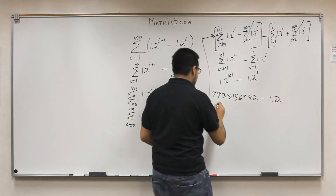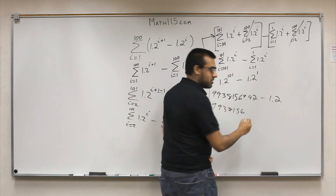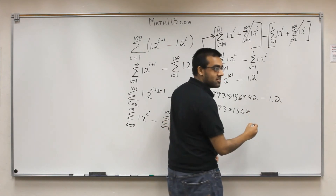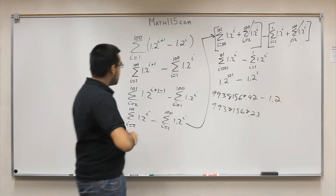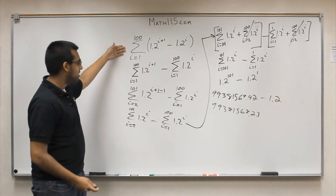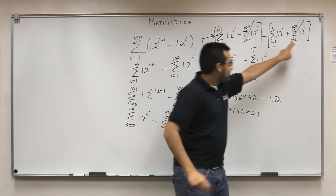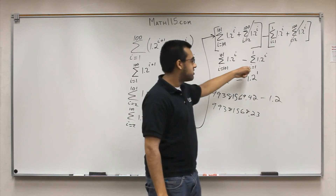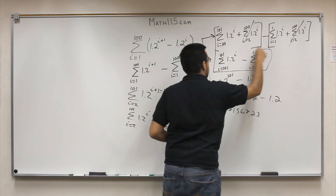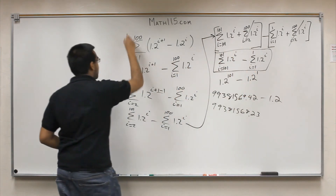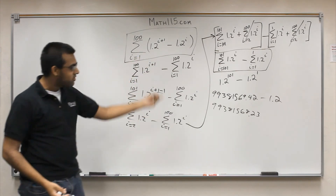So to solve this finally, you get approximately 99381568.23. We took something that was initially pretty complicated in terms of how you solve it, broke it down, identified the overlapping parts, canceled them out, and were left with something much simpler to solve. This final simplified line is identical to the original problem — it's just a much easier way to look at and solve it.